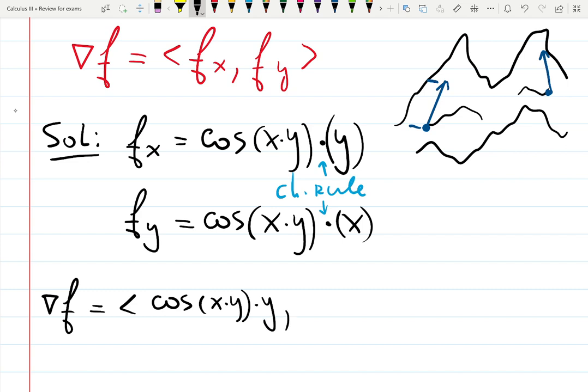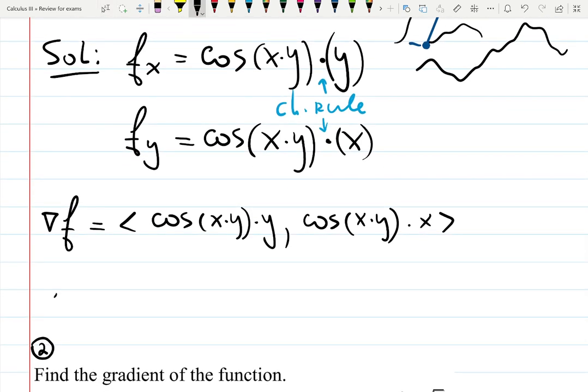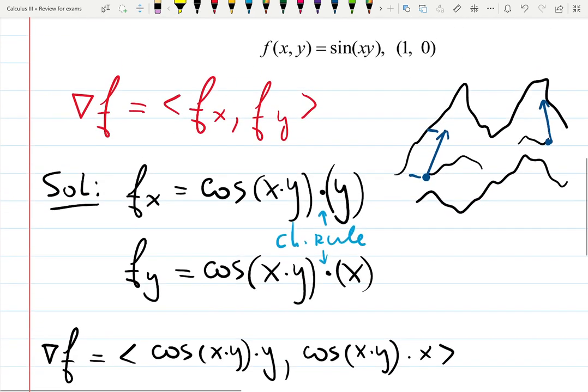cosine(xy) times y, cosine(xy) times x. And then, they ask you to check what is the direction going to be at the point. What point? They gave you the point. (1,0).